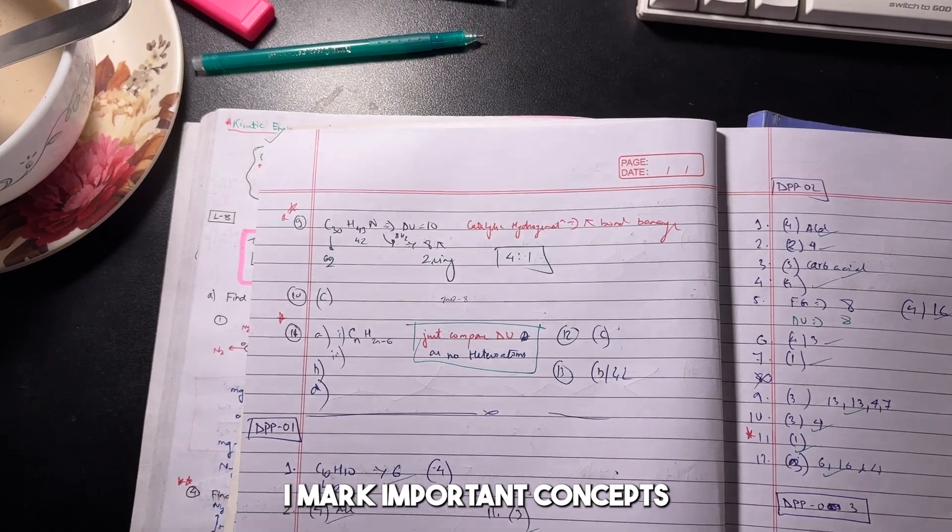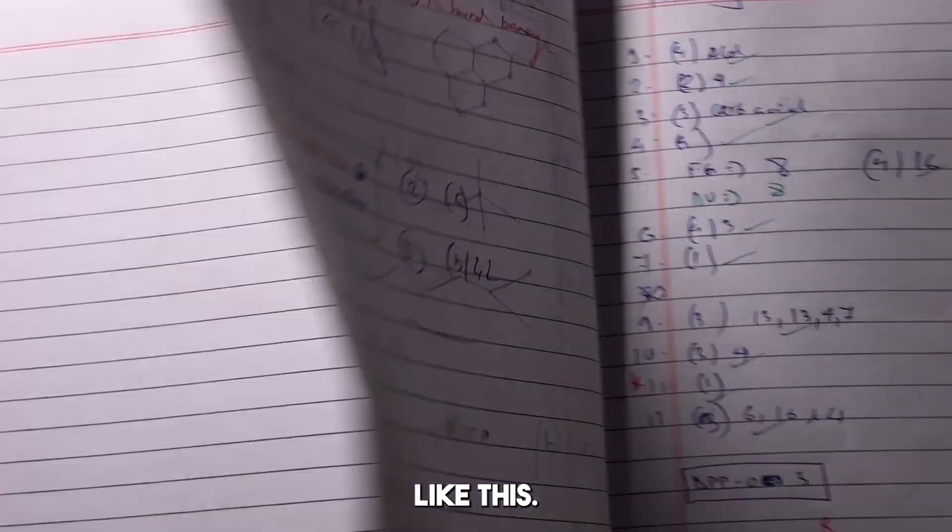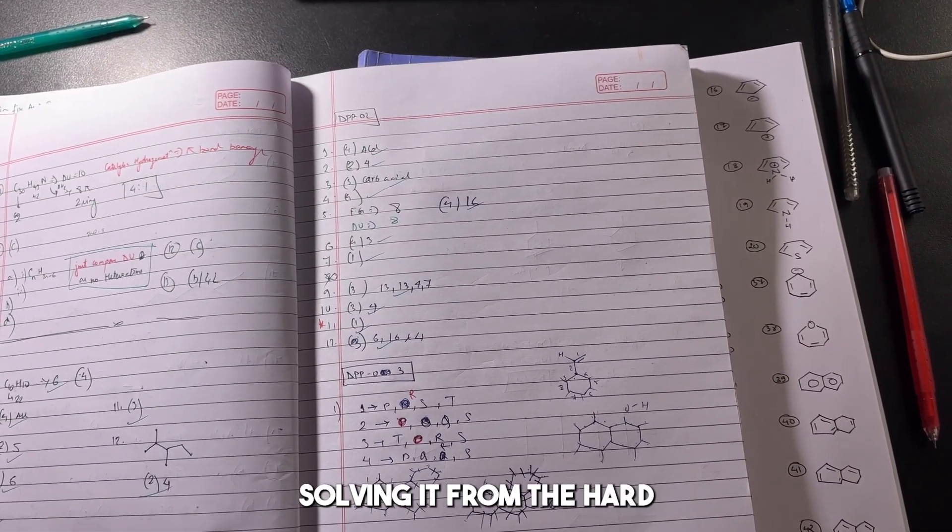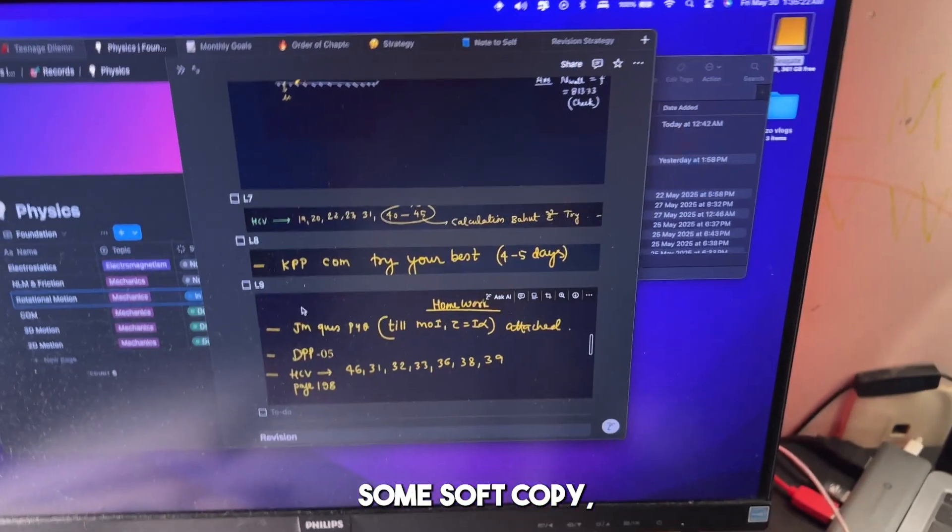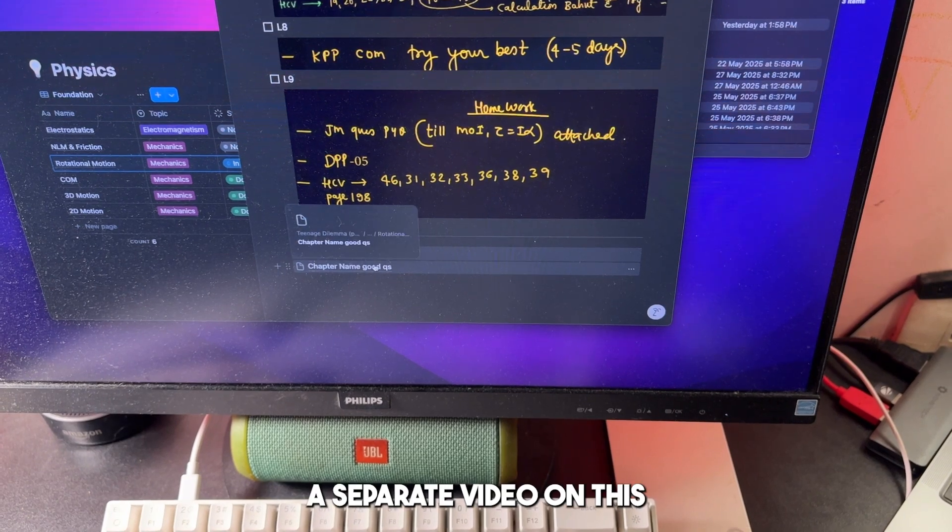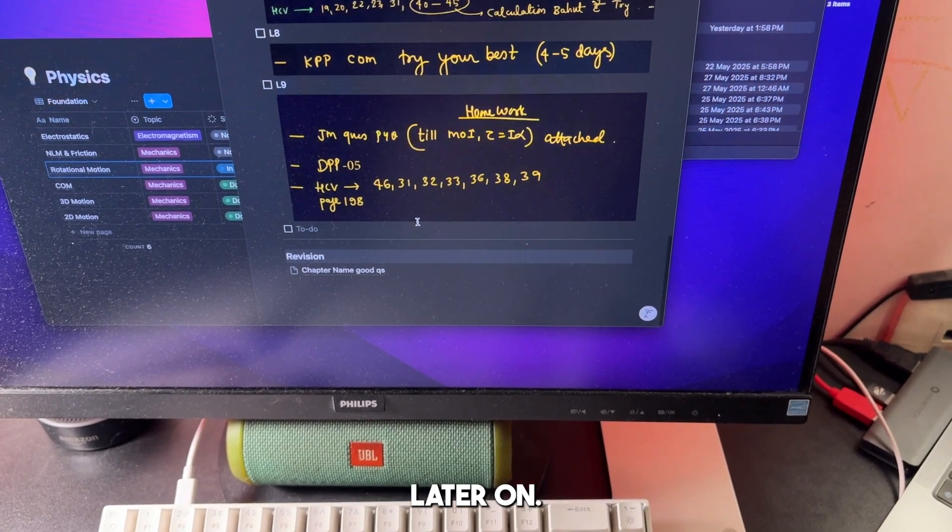I mark important concepts in the question itself like this. Also, if I am solving it from a hard copy, I mark the question there itself. And in case it's some soft copy, I put it in my Notion. And I will make a separate video on this later on.